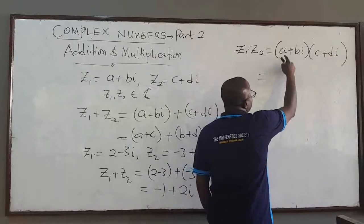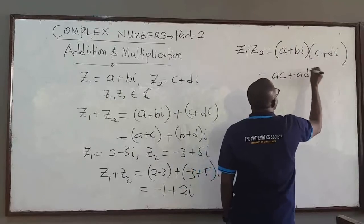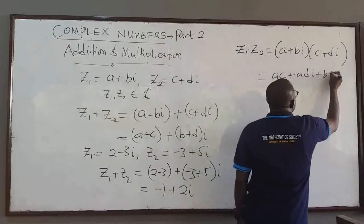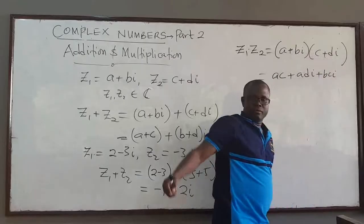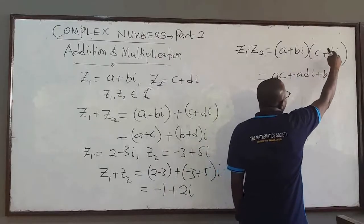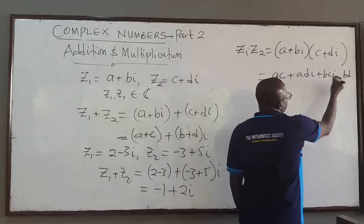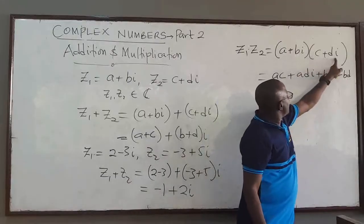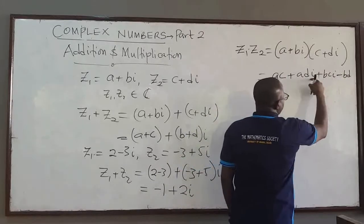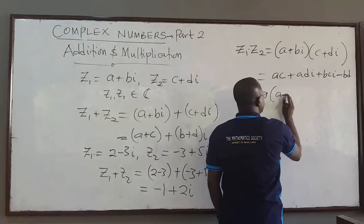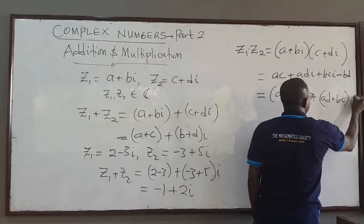So I do it as I would for binomials: take A multiplied by C, that gives AC; take A multiplied by Di, that gives ADi; take Bi multiplied by C, that gives BCi; and take Bi multiplied by Di, that gives BD times i squared. But i squared is negative 1, so that term becomes minus BD. Combining the real parts gives AC minus BD, and combining the imaginary parts gives AD plus BC, multiplied by i.